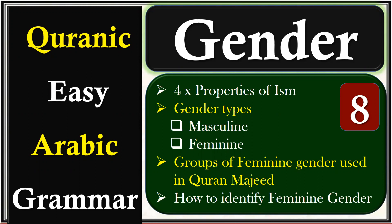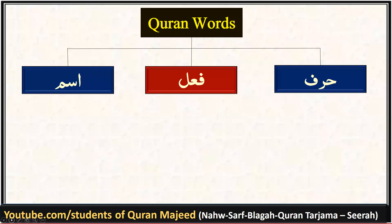We are back with our next Quranic Easy Arabic Grammar lesson. Today we are going to learn about the gender of a noun. We will learn the four properties of an ism, then learn the types of gender, and then how we are able to identify different genders from the Quran.